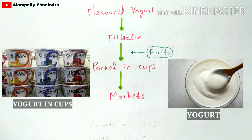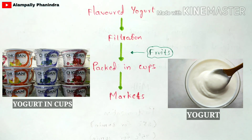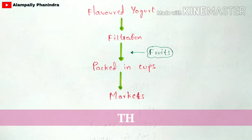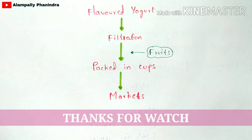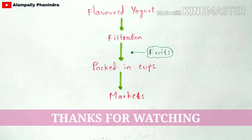The final yogurt product is a gel-like, semi-solid substance — it is neither fully solid nor fully liquid, as you can see in the picture. This completes the production of yogurt. If you like this video, subscribe to the channel, and if you have any thoughts regarding this topic, please leave a comment.